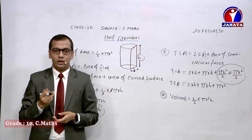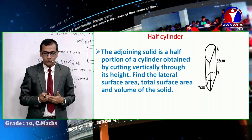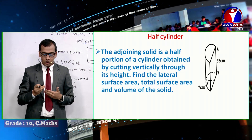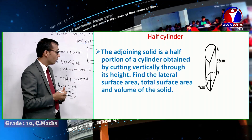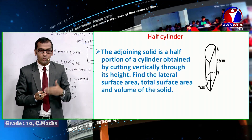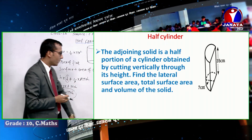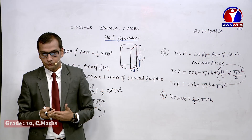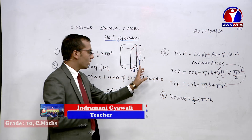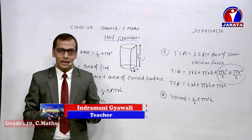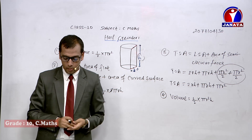Looking at the slide, the solid object shown is a half cylinder where the height is 35 cm and the radius is 7 cm. With these two values — height and radius — we can find the lateral surface area, total surface area, and volume of this half cylinder.